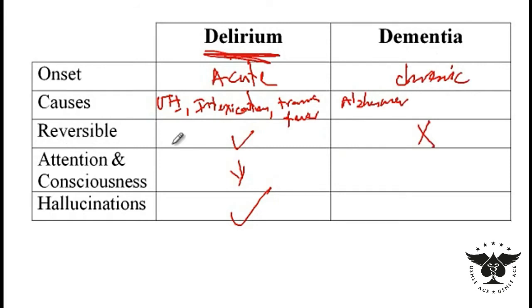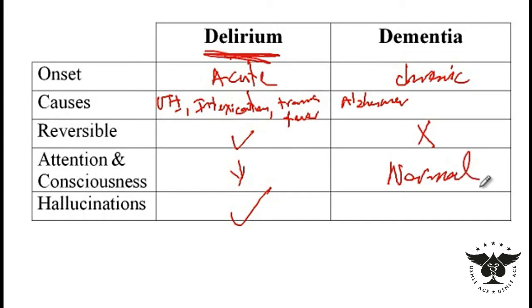The cause of dementia is usually not reversible. If someone has Alzheimer's, for instance, you would not be able to reverse the memory loss in those patients. However, attention and consciousness are usually normal — you can talk to an Alzheimer's patient and they look okay.